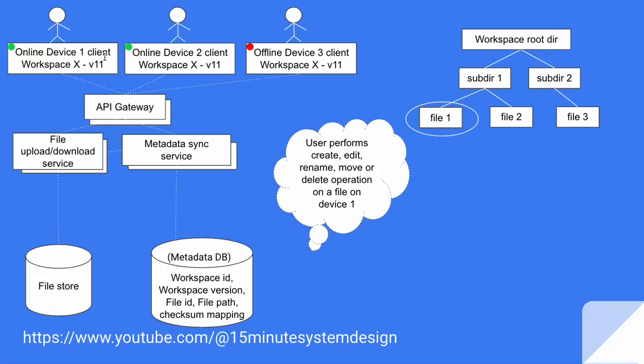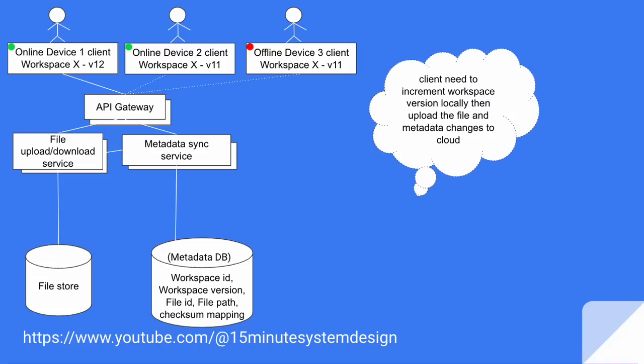For each device we have a client. Now let's say a user tries to perform some operation on a file on device one, and this might be either creating a file, editing, renaming, moving, or deleting a particular file. Very immediately, this client will have to increment the workspace version locally, then upload this file and metadata changes to the cloud.